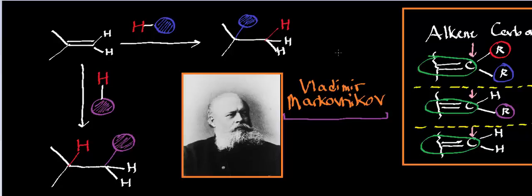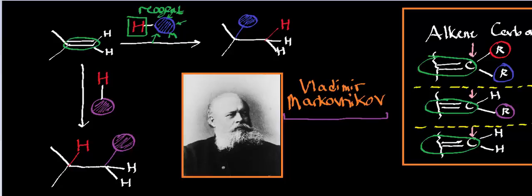Here's what he noticed. When you take this general alkene and subject it to some set of reagents — ordinarily something that has hydrogen and then some other group, indicated generically — what Markovnikov noted was that in most cases, the hydrogen of this reagent added to the side of the double bond that had the most hydrogens. Looking at this alkene: the left side has zero hydrogens — it has two carbon chains but no hydrogens. This side has zero hydrogens.